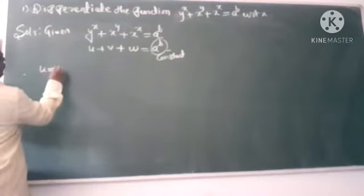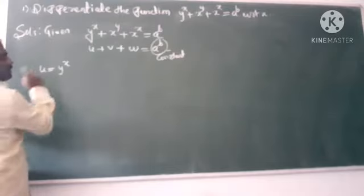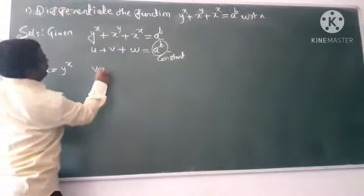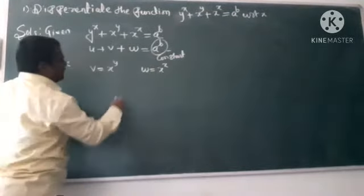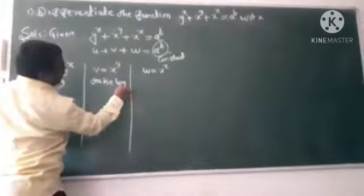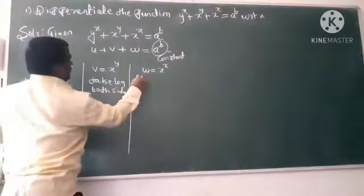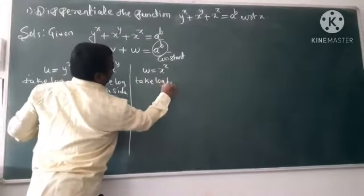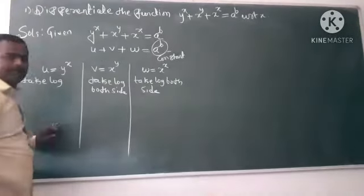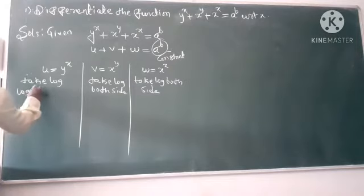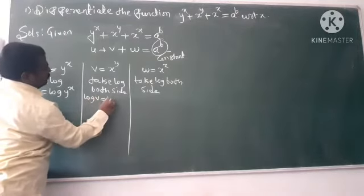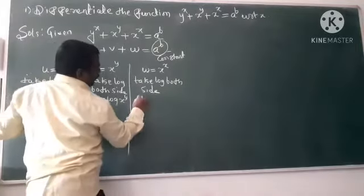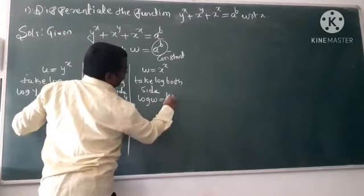Let u = y^x, v = x^y, and w = x^x. Now take log of both sides for each substitution. So log u = log(y^x), log v = log(x^y), and log w = log(x^x).